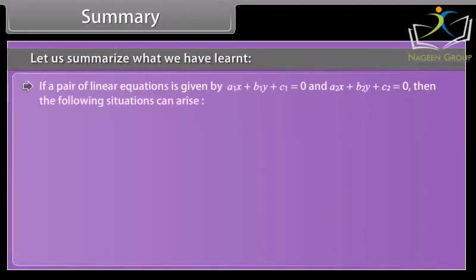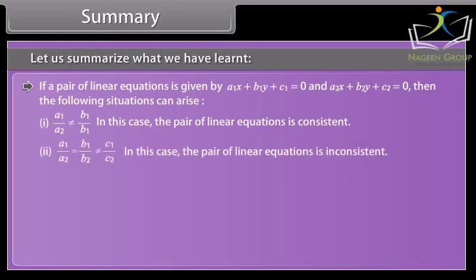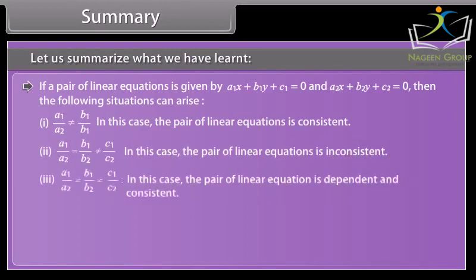For a pair a1x + b1y + c1 = 0 and a2x + b2y + c2 = 0: (1) if a1/a2 ≠ b1/b2, the pair is consistent; (2) if a1/a2 = b1/b2 ≠ c1/c2, the pair is inconsistent; (3) if a1/a2 = b1/b2 = c1/c2, the pair is dependent and consistent.